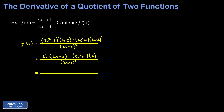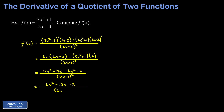Distributing 6x over 2x minus three gives 12x squared minus 18x. Then distributing 2 over 3x squared plus one — but multiplied by negative one — gives negative 6x squared and negative two. Everything is divided by 2x minus three quantity squared. Combining like terms: 12x squared minus 6x squared gives 6x squared, plus the linear term negative 18x, and the constant negative two. The denominator remains 2x minus three quantity squared.